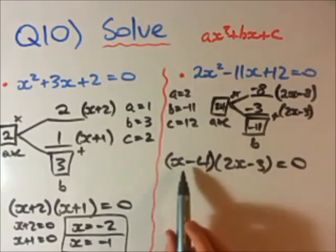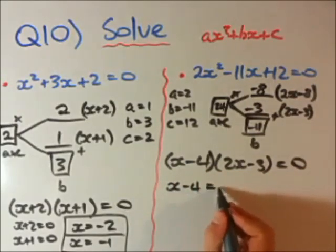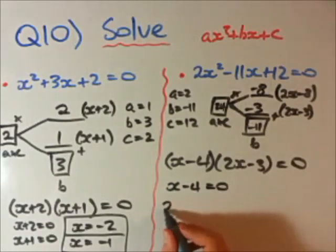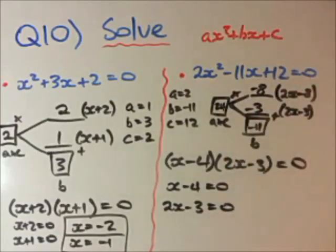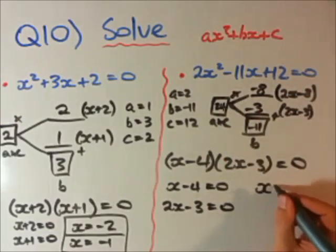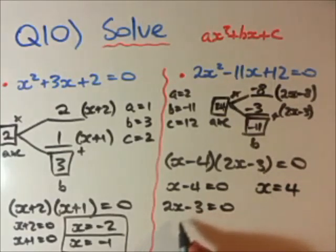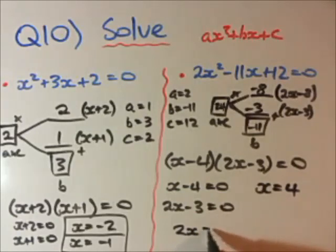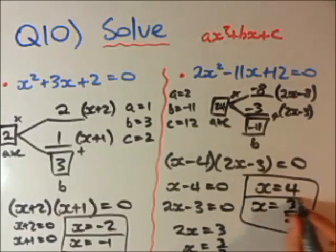And, then we know, using our null factor law, for this to be equal to 0, if x minus 4 was 0, or 2x minus 3 was 0, our solution would work. So, we can get our answers as x equals, add 4 to both sides. And, here, takes a little bit more steps. We can go, put the 3 over. So, 2x equals 3. And, x will give us 3 divided by 2. And, there are our 2 answers when we are trying to solve for x with these quadratic equations.